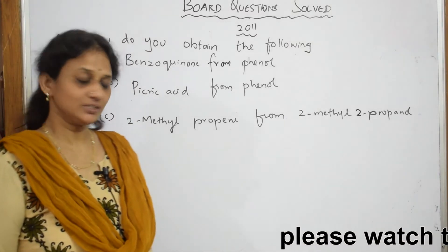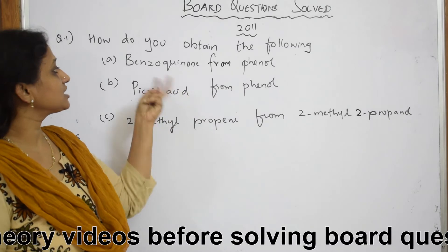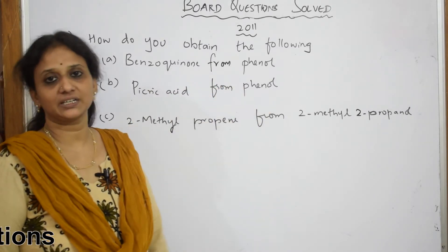So let us do one more 2011 question. What does this question say? How do you obtain the following: benzoquinone from phenol, picric acid from phenol?